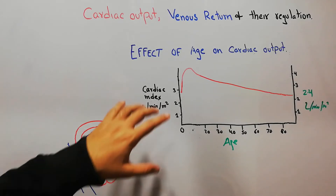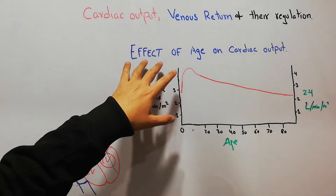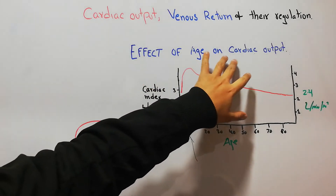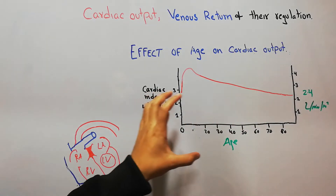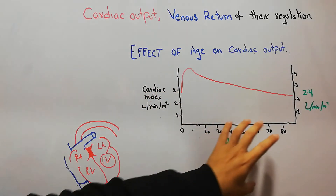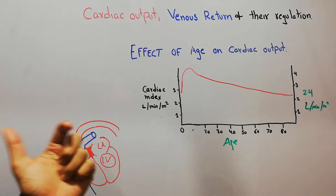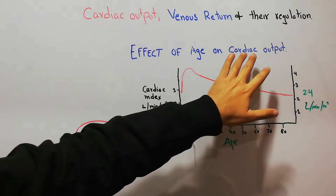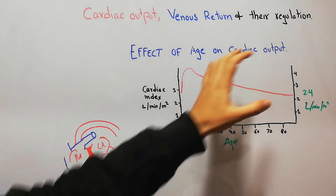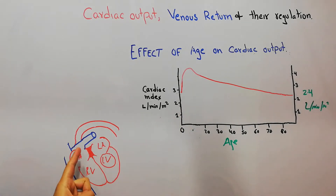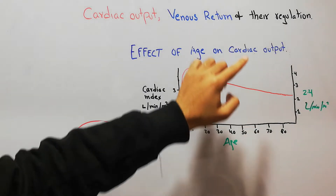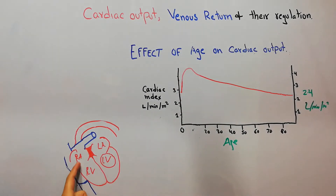In this lecture we are going to discuss the effect of age on cardiac output — how cardiac output changes with increasing age. Cardiac output is basically the amount of blood that the heart pumps into the aorta every minute. Venous return, on the other hand, is the amount of blood that is coming to the heart per minute.